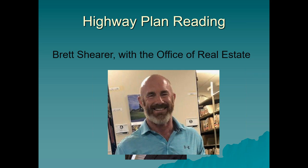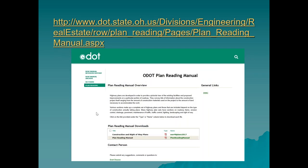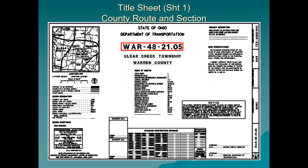Before I get into the PowerPoint presentation, on ODOT's Office of Real Estate website there is a plan reading manual download. You can actually download a manual that goes along with the plans I'm going to be covering today. The full set of construction plans and right-of-way plans are available for download in PDF format, and you can print them in quarter size for easier readability.